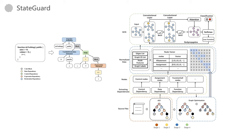State Guard constructs an abstract syntax tree of the smart contract, extracts key features, and uses GCN to identify the defects. Our methodology consists of four stages: AST generation, feature extraction, graph processing, and defect detection.